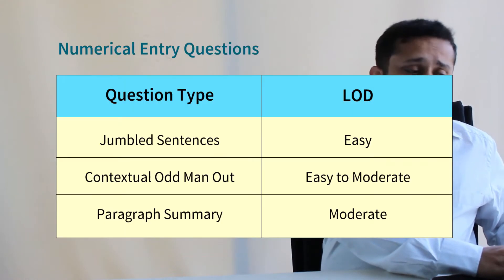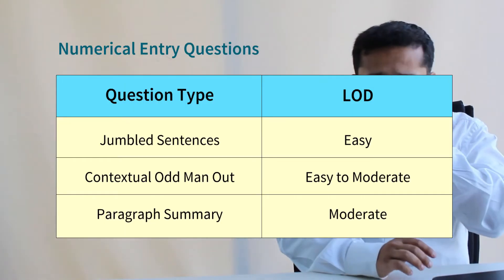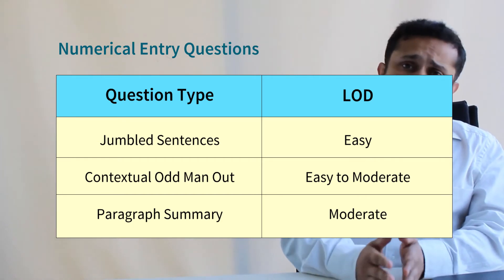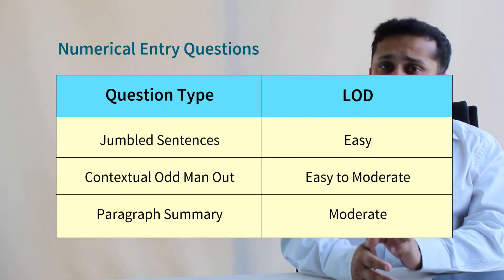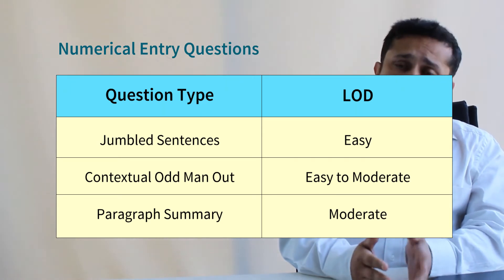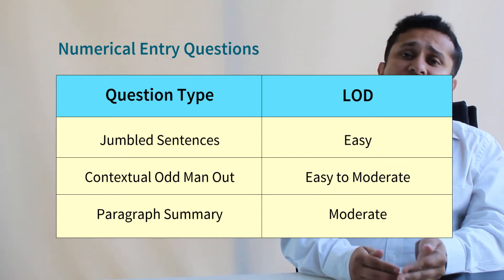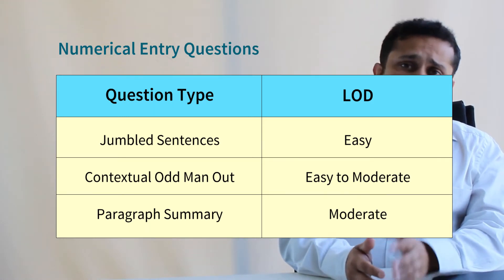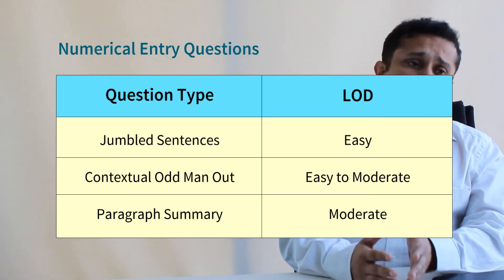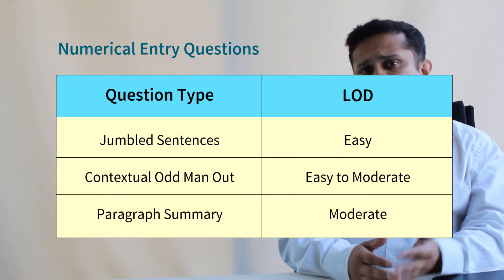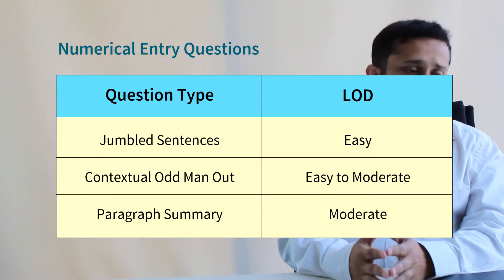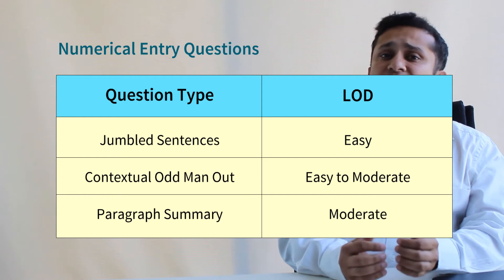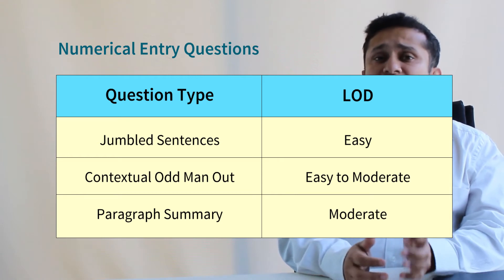Coming to the non-RC part, we had the same kind of breakup with para summary, para jumbles, and contextual odd man out. The good thing for you, again like iCAT 21, was that there weren't really too many tough questions. Para jumbles was easy, contextual odd man out was easy to moderate, and para summary was moderate. So 5 to 6 questions would again be easily manageable as far as this part of the section was concerned.